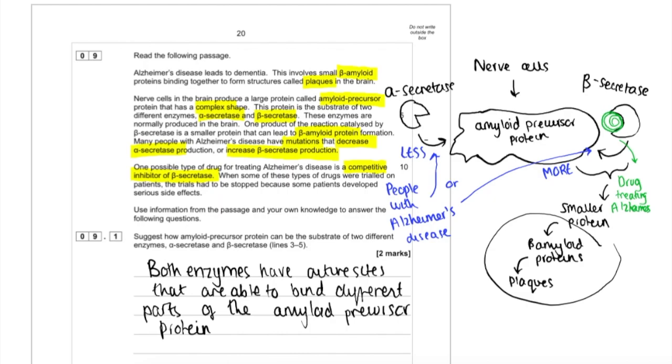You can see what I've done on the side here is I've drawn out a diagram to help simplify this because there's a lot of words and it's actually just a process you need to visualize. I've drawn the amyloid precursor protein, that's the substrate, and two different enzymes, alpha and beta secretase that work on it. Beta secretase works on it to produce a smaller protein, beta amyloid proteins, and then plaques.